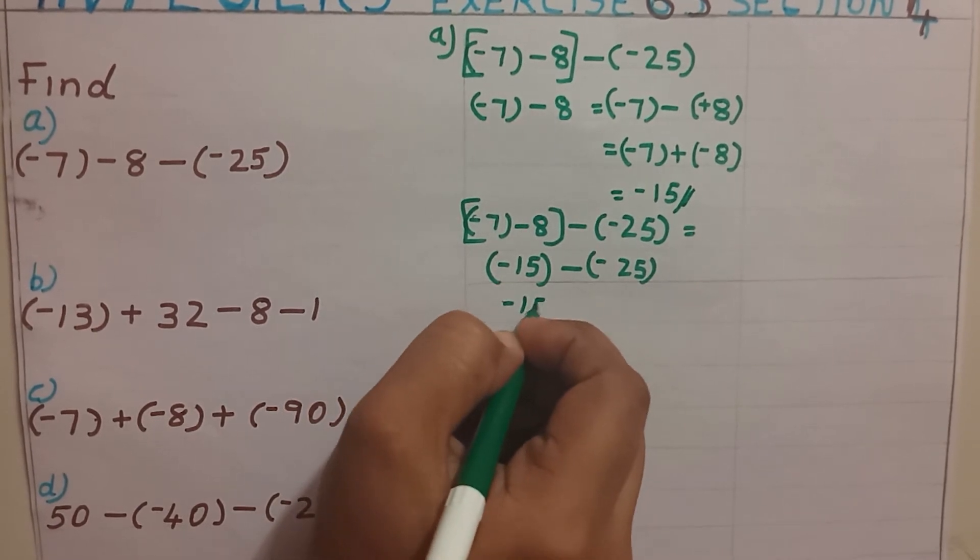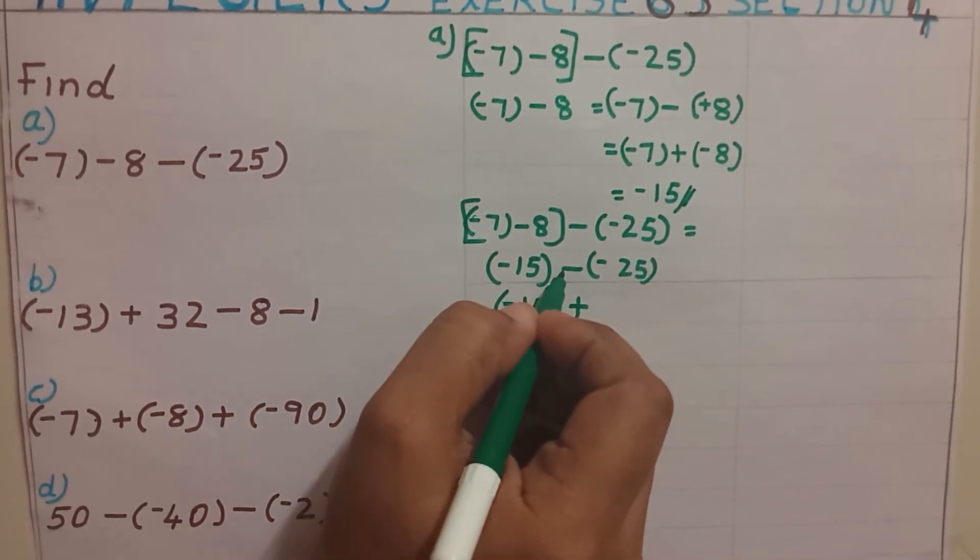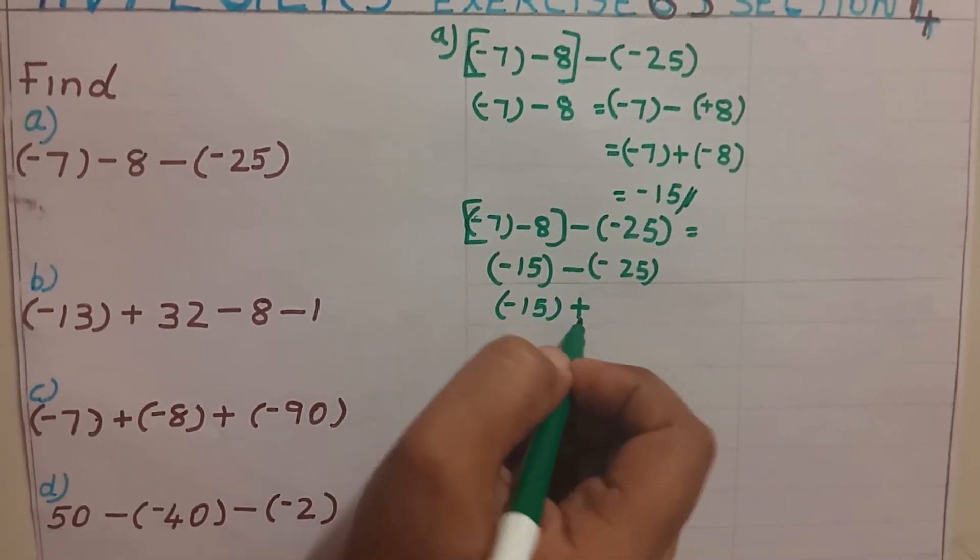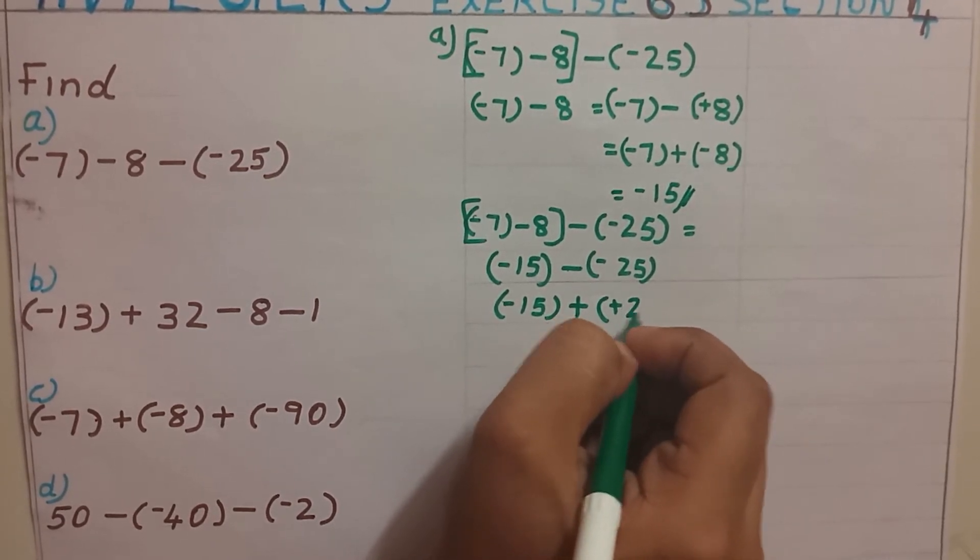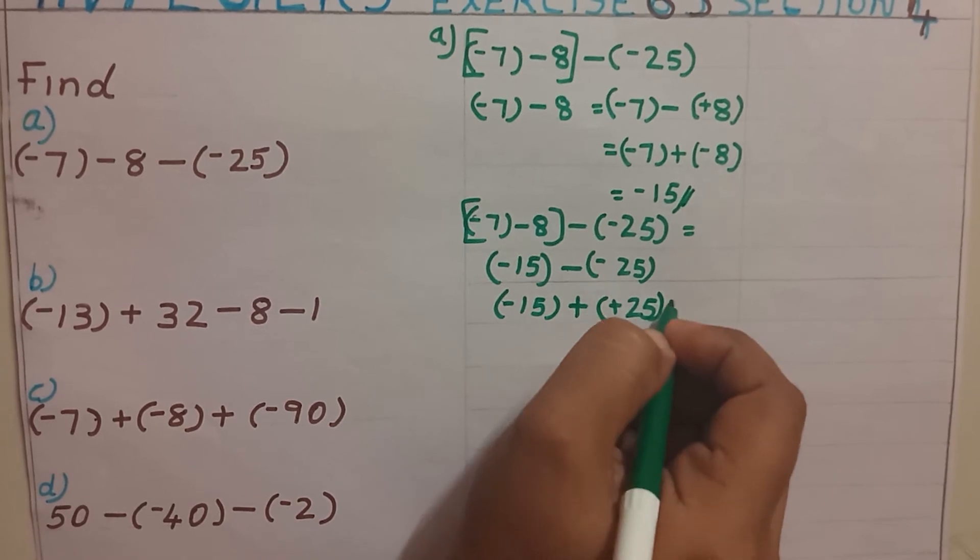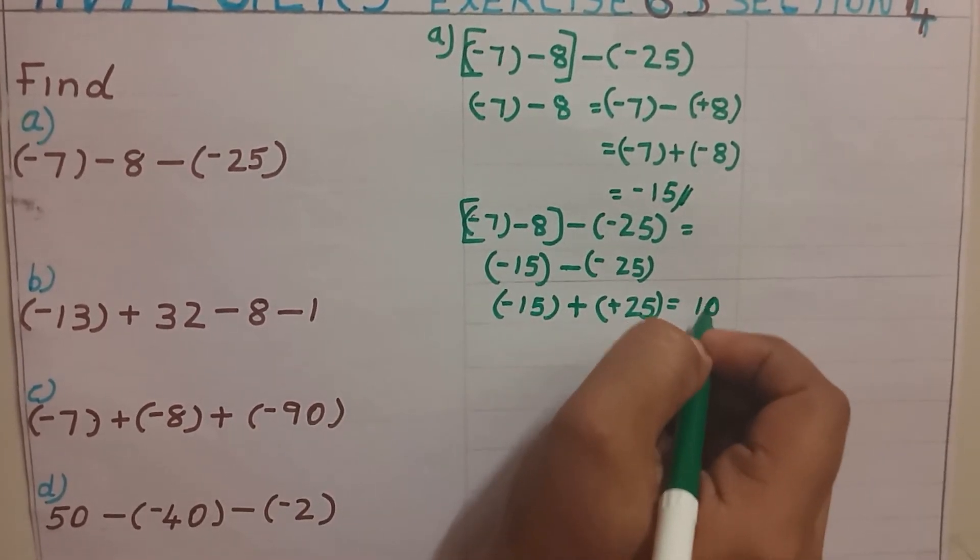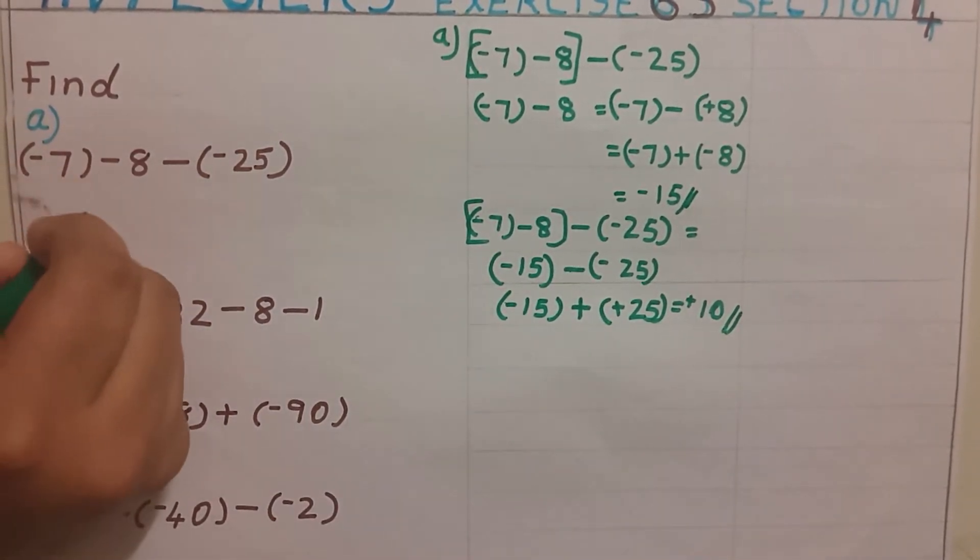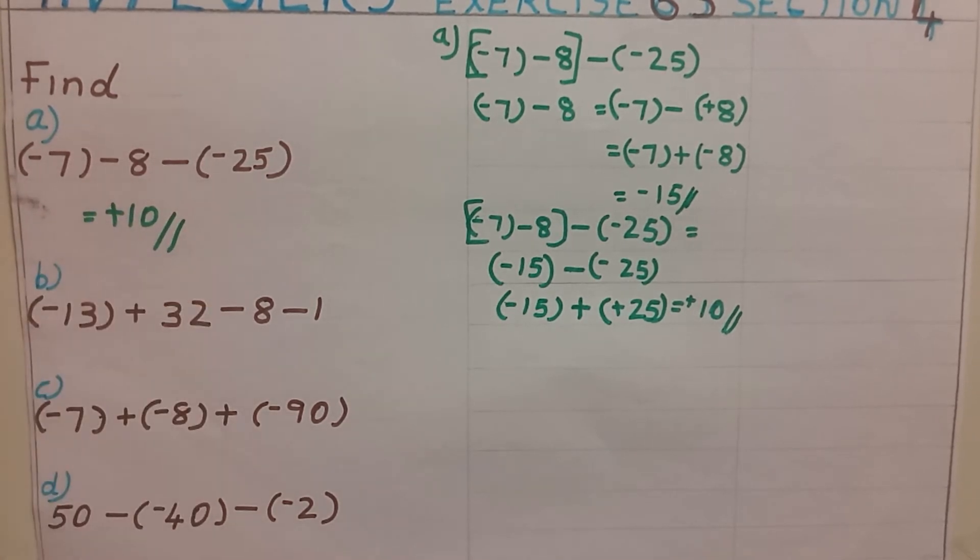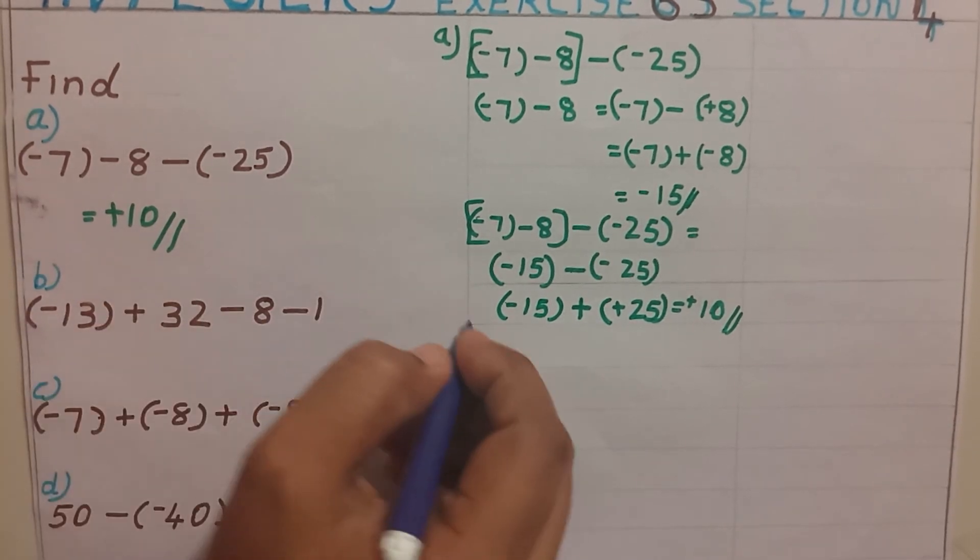This I am going to rewrite as minus 15, take the additive inverse, change the subtraction into addition and take the additive inverse, so positive 25. By applying the rules, positive 10. So our answer is positive 10.